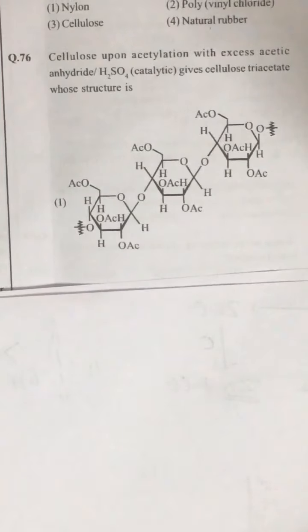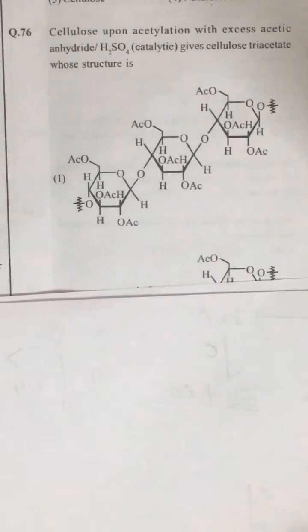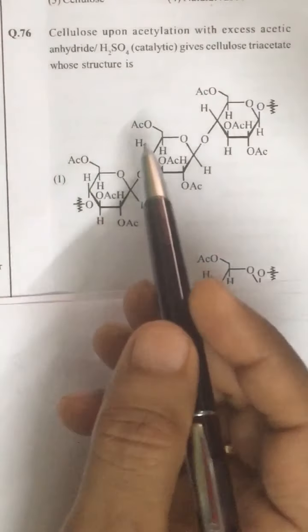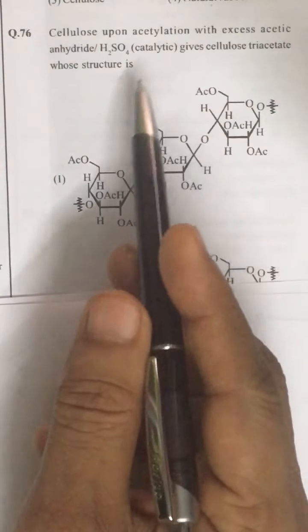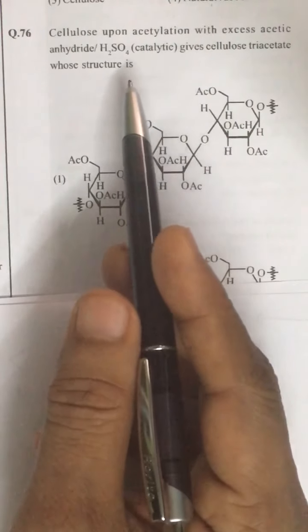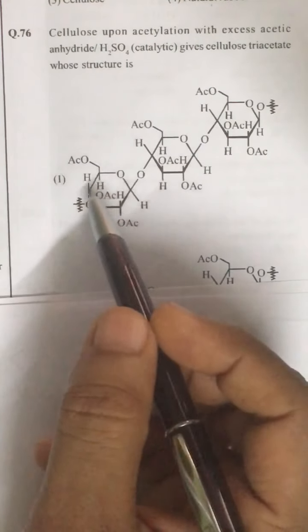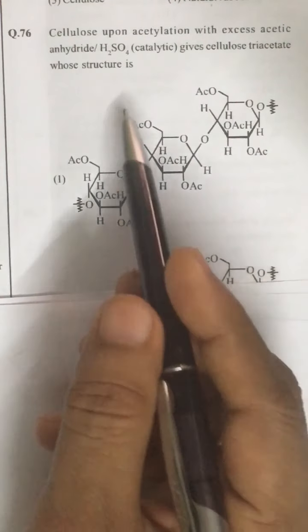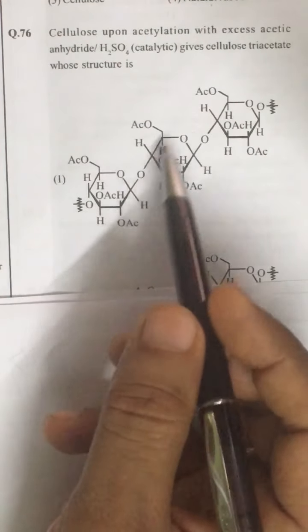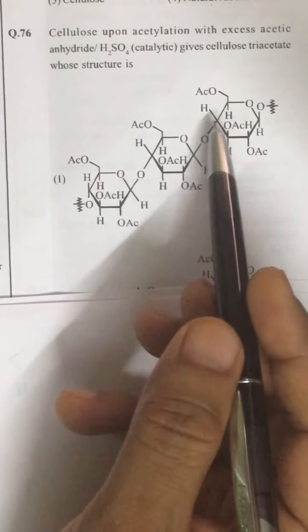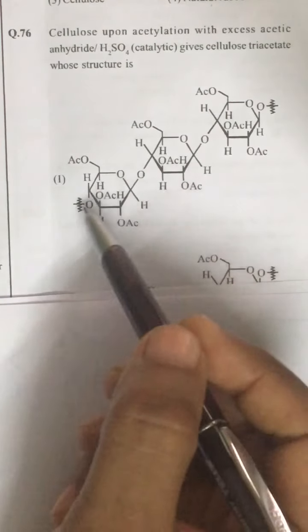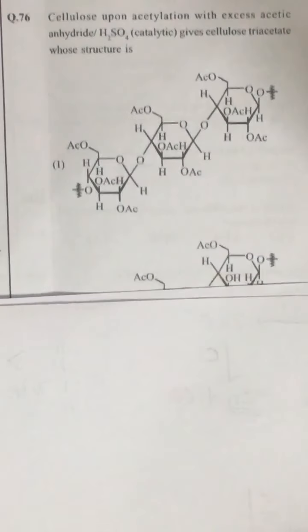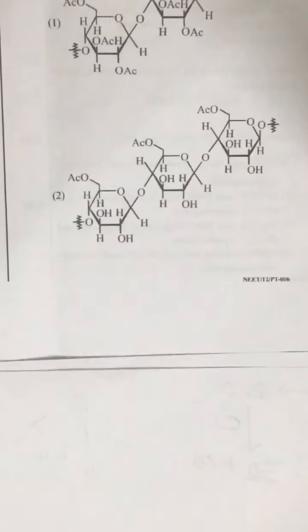Question number 76: cellulose is acetylated. You must know the structure of cellulose — only then will you be able to write the structure. The correct answer is the first option.